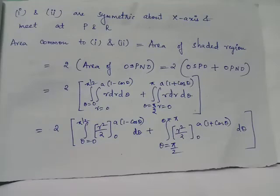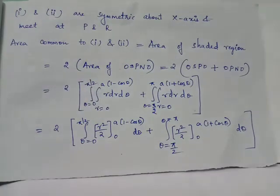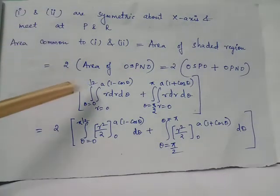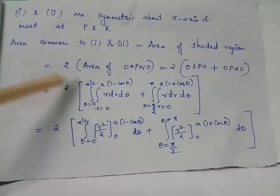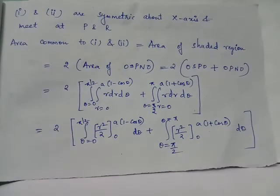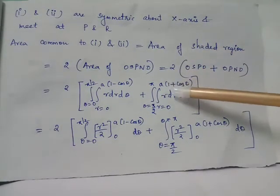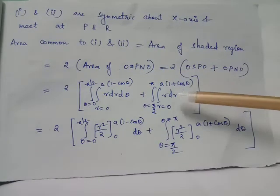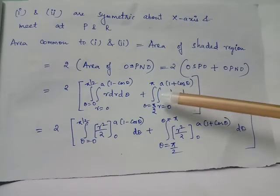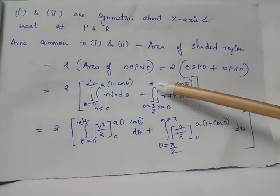The area of a polar curve is given by the double integral of R dR dθ. For region OSP, R varies from 0 to A(1 minus cos theta) with theta from 0 to pi by 2. For region PNO, the cardioid R equals A into 1 plus cos theta applies with theta from pi by 2 to pi.